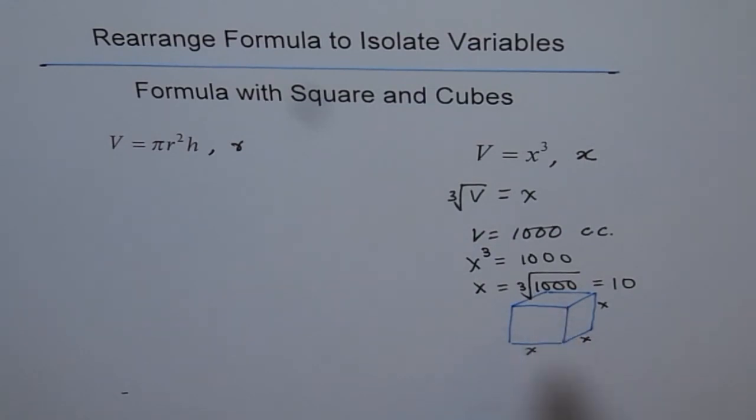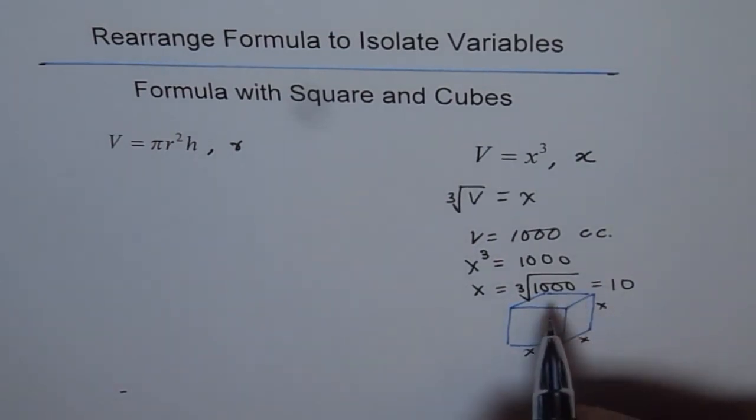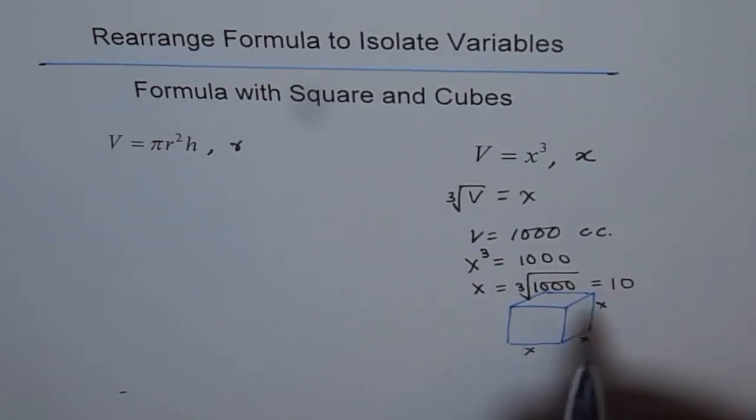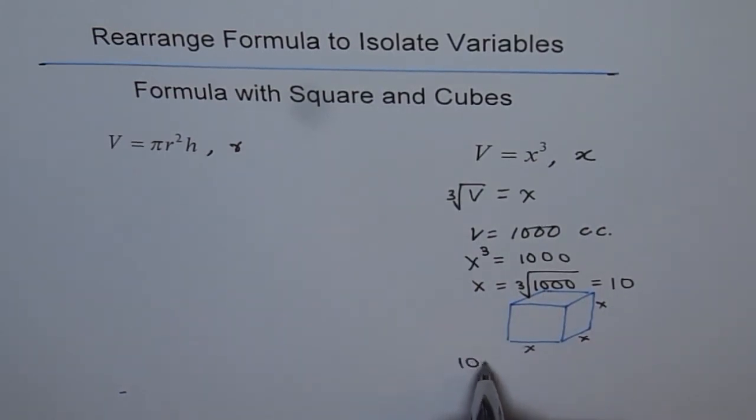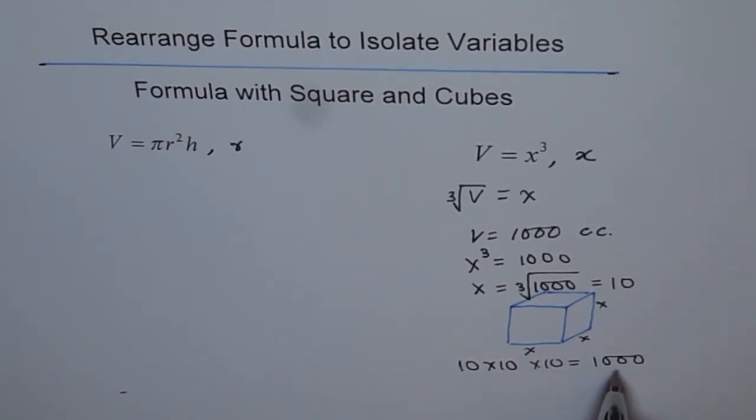Cube root really means like square root is, when you multiply 10 times 10, you get 100. So square root of 100 is 10. Similarly, cube root of 1000 is 10. How? You see, 10 times 10 times 10 gives you 1000.